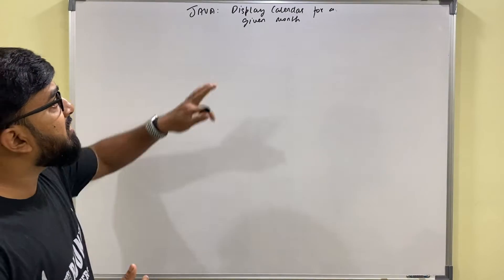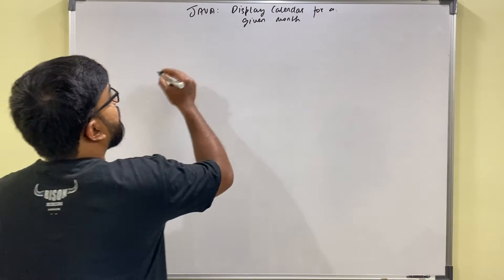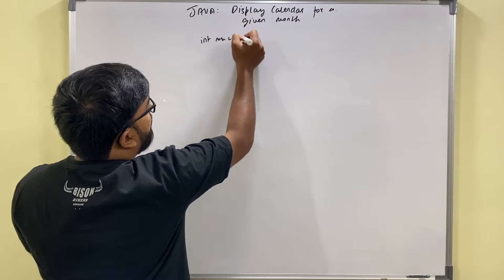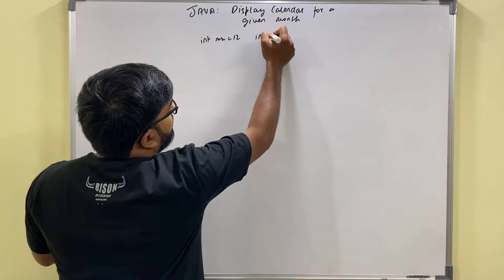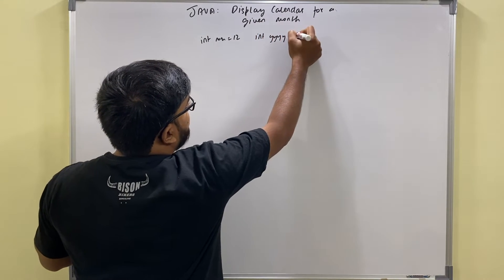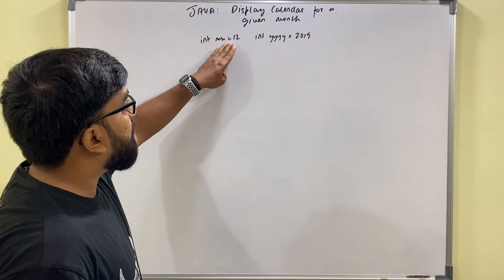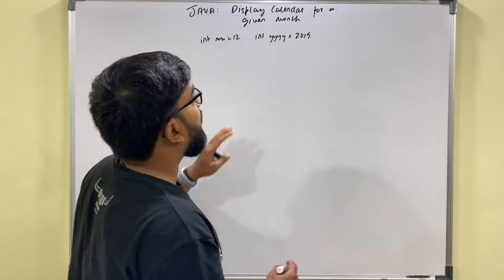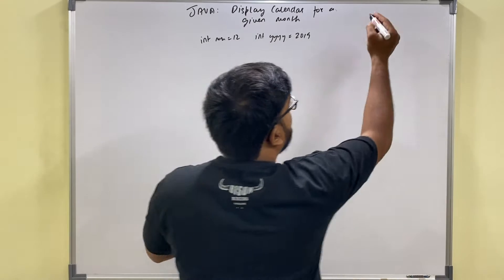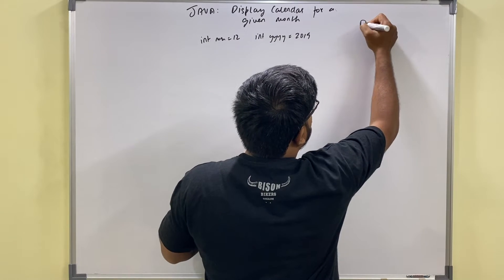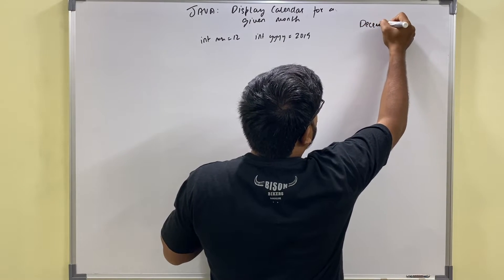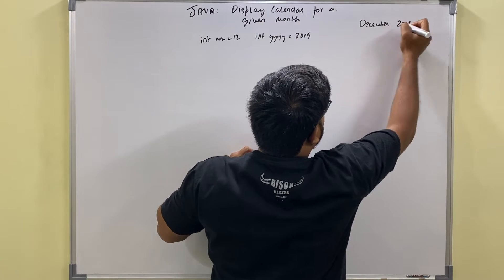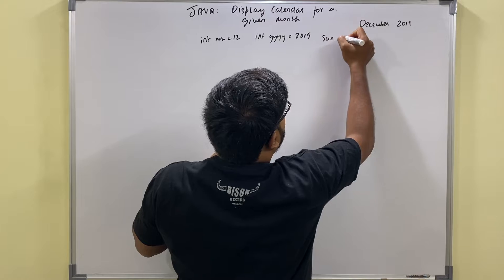I am given a month number MM equal to 12 and a year, say 2019. For month number 12 and year 2019, month number 12 is December. So I need to print the calendar for December 2019 — the name of the month, the year, and then the calendar.